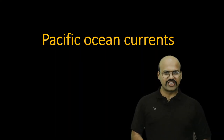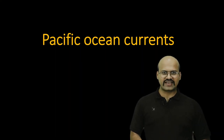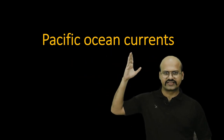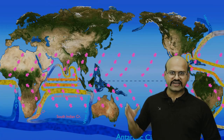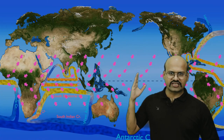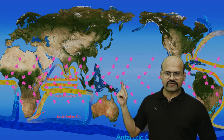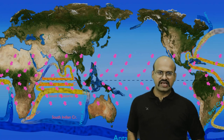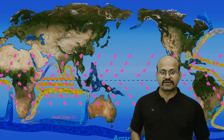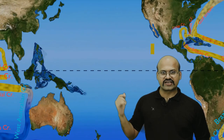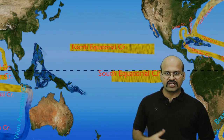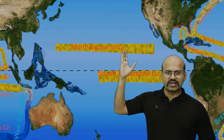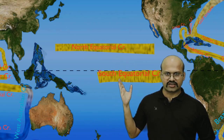Hello friends, welcome to another video of Zeta Axis. Today we will discuss Pacific Ocean currents. We know that trade winds flow in this direction, coming near the equator and flowing parallel to it. Because of the dragging force applied by these trade winds, we see equatorial currents in both hemispheres: the North Equatorial Current and the South Equatorial Current.